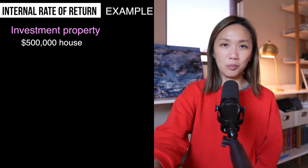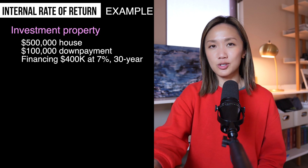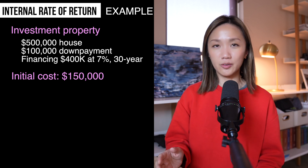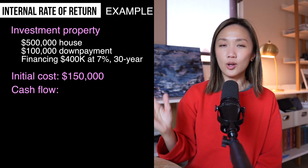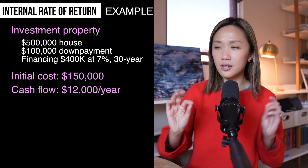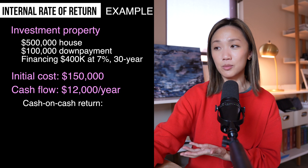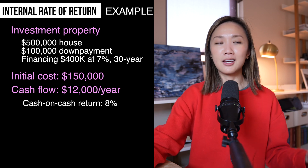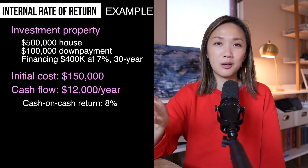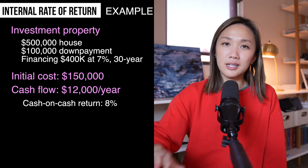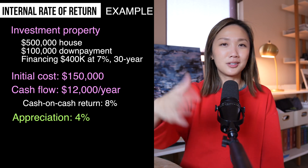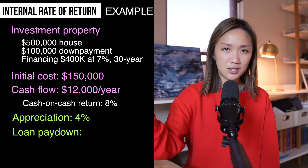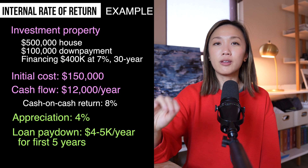Let's look at some examples. Let's say you're getting a $500,000 property, putting down $100,000 as your down payment, and a 7% interest rate for a 30-year loan. Your all-in initial cost, including furniture, setup, and closing fees, comes out to $150,000. Assume this is an Airbnb and the cashflow is $12,000 per year after all your expenses. If you were to calculate a cash-on-cash return based on these numbers, this would be an 8% return cash-on-cash — which is not exciting at all relative to the risk and time you're putting in compared to your other investment vehicles. But remember, you are making money in other ways. Let's assume market appreciation is 4% per year, and over time you're also paying down your loan. From the amortization table, in this specific scenario it is between $4,000 to $5,000 per year for the first five years.